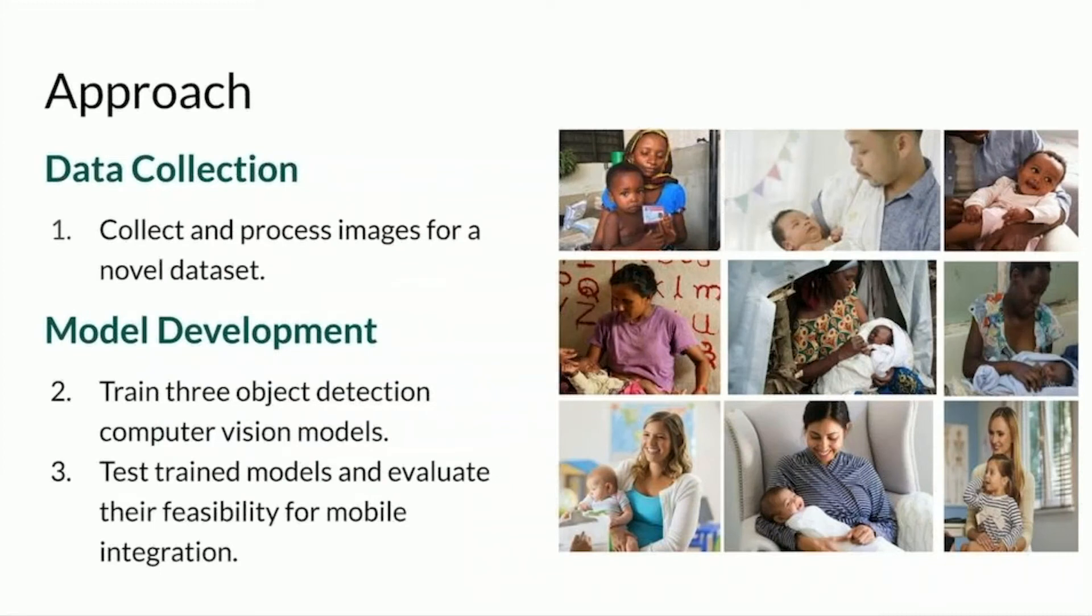Our approach is broken up into three steps and split into two categories of data collection and model development. We have collected over 300 images and mainly labeled them in preparation for training. Labeling these images allows the object detection models to separate objects into classes and provides a baseline for what a respective object looks like. In my case, we're labeling to know what the child and the parent looks like. On the right, you can see some of the images used in developing and training the model.